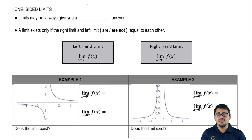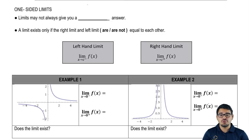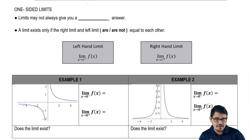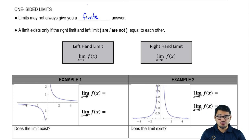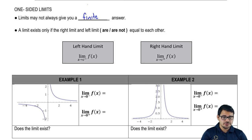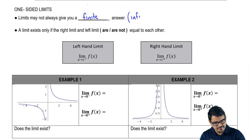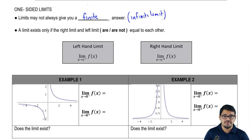Now we have the one-sided limit example. In one-sided limits, you're not guaranteed to always approach one finite number. Limits may not always give you a finite answer — by finite I mean like a 2, a 1, or a 0. That opens doors for us to discuss infinite limits, which is the opposite of having a finite limit.